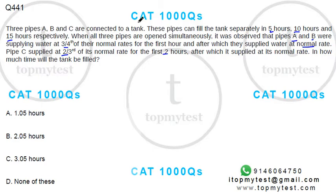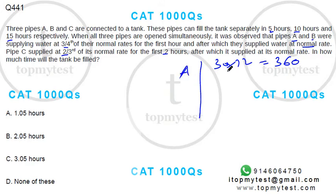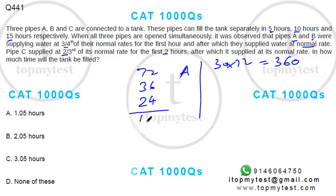Since the rates involve one-fourth and one-third reductions, let's multiply by 12 to get a convenient number. Taking 360 liters as the tank capacity: A fills it in 5 hours, so 72 liters per hour; B fills it in 10 hours, so 36 liters per hour; C fills it in 15 hours, so 24 liters per hour. Together they can fill 132 liters per hour at full pace.